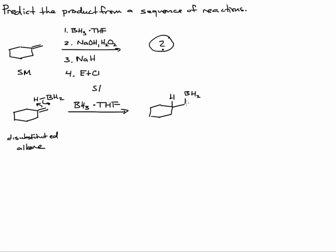This will go on to repeat itself two more times. We'll end up with a trialkyl borane, which in step two we're treating with basic hydrogen peroxide. That will form sodium peroxide anion and that's going to do an oxidation where the boron is bonded to the carbon. So essentially we're ending up with a primary alcohol at this point.